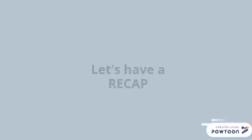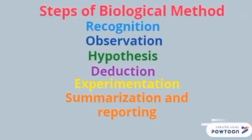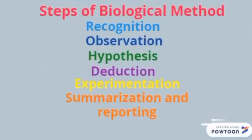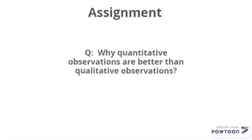Let's have a recap. We studied the biological method and its steps: recognition, in which we identify the problem; observation, in which we observe things related to it; then hypothesis, deduction, experimentation, and summarization. We covered recognition and observation in detail, and we will study the remaining steps in our next video. Your assignment question is: why are quantitative observations better than qualitative observations? You can find the answer in this video.